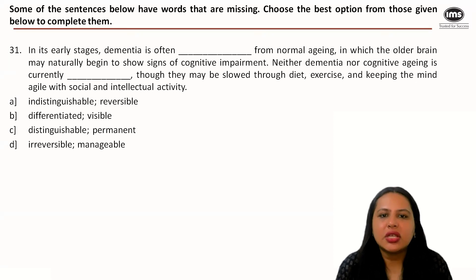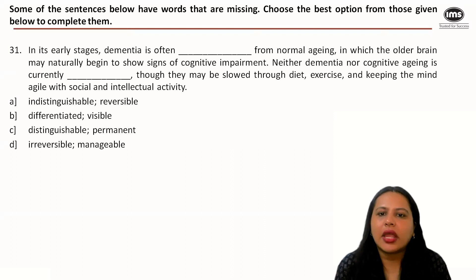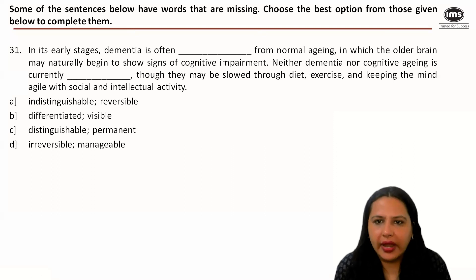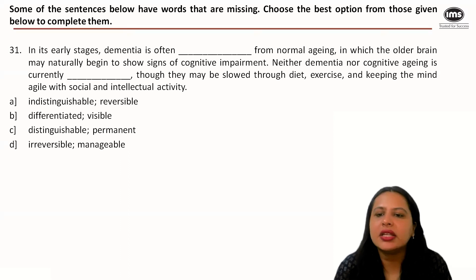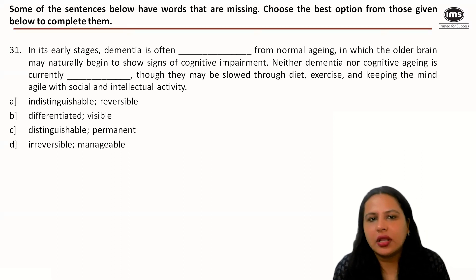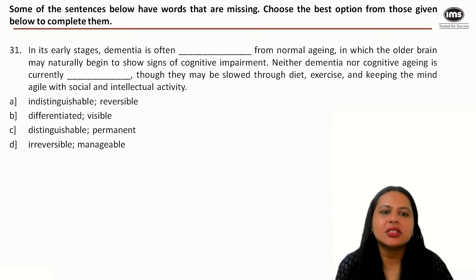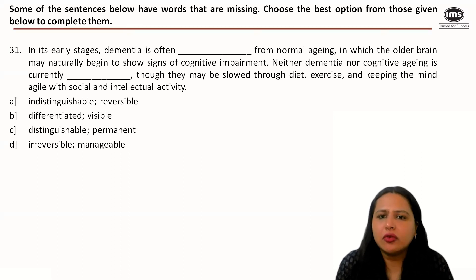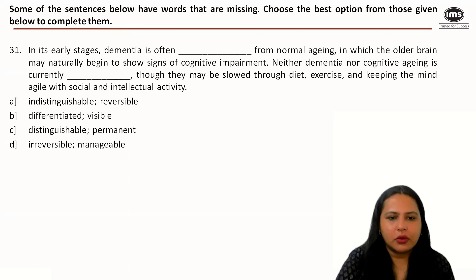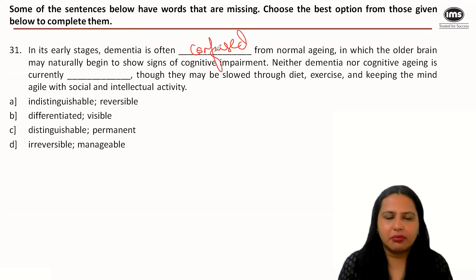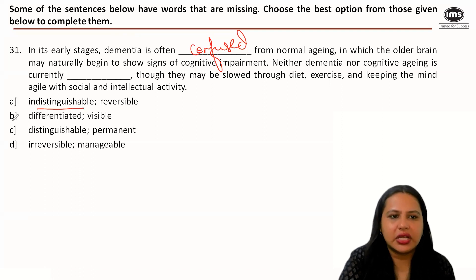Question three: 'In its early stages, dementia is often dashed from normal aging, in which the older brain may naturally begin to show signs of cognitive impairment. Neither dementia nor cognitive aging is currently dashed, though they may be slowed by diet, exercise, and keeping the mind agile with social and intellectual activity.' In early stages, dementia may be confused with normal aging — so we need a word meaning confused or indistinguishable.